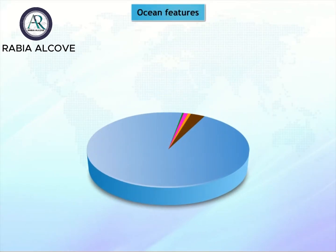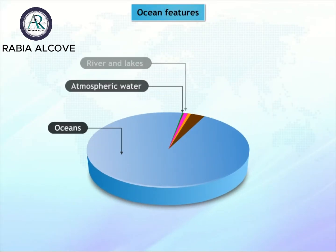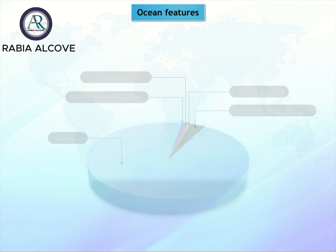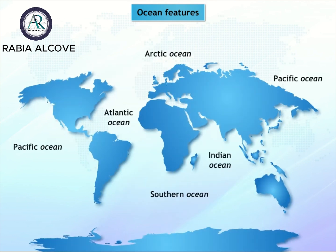Oceans and seas cover 70% of the Earth. They contain about 97% of all the water on Earth. There are five oceans on Earth, the Pacific being the largest. After that is the Atlantic, the Indian, the Southern, and the Arctic Oceans.